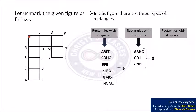Next, we are going to find the number of rectangles with 4 squares. And there is only one rectangle. That is ABJI.